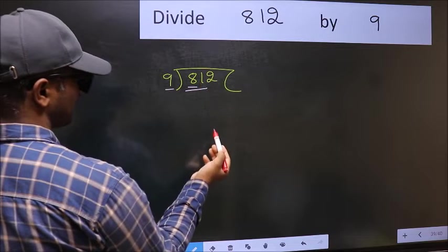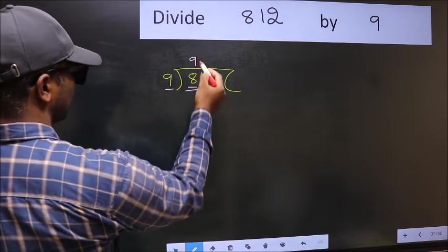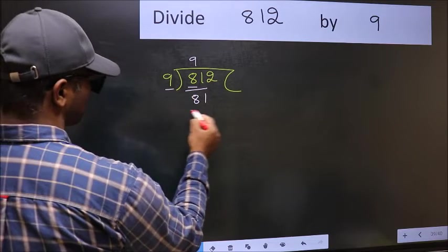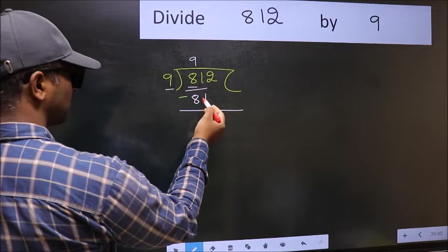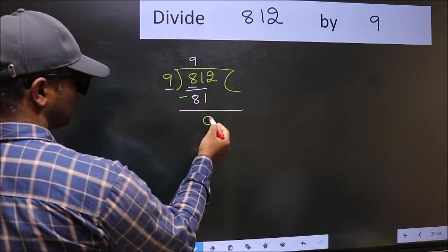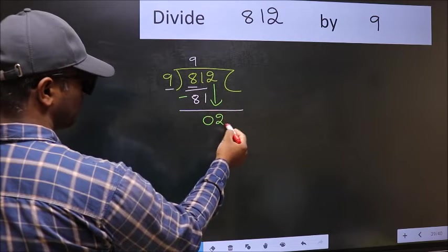So we should take 2 numbers, 81. When do we get 81 in 9 table? 9 times 9 is 81. Now you should subtract. 81 minus 81, 0. After this, bring down the beside number. So 2 down.